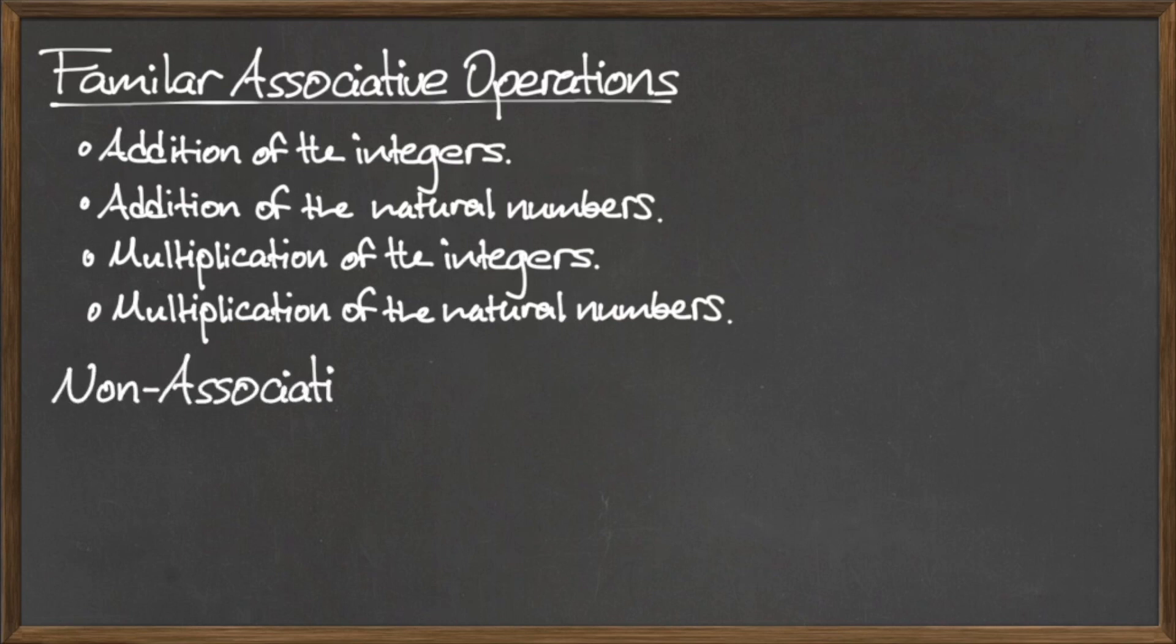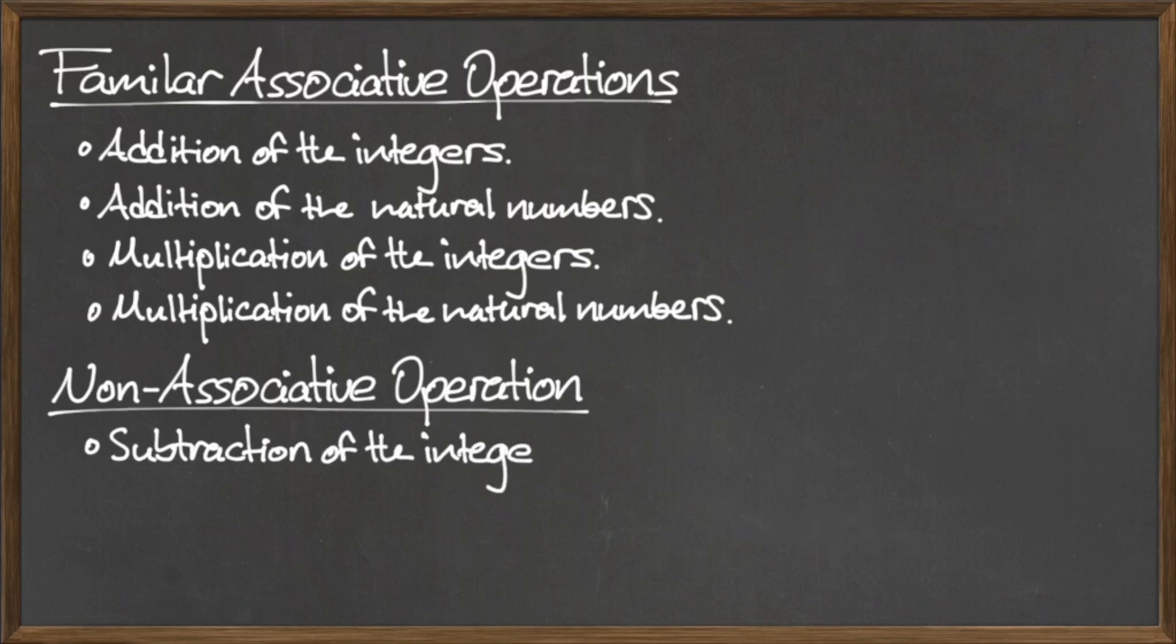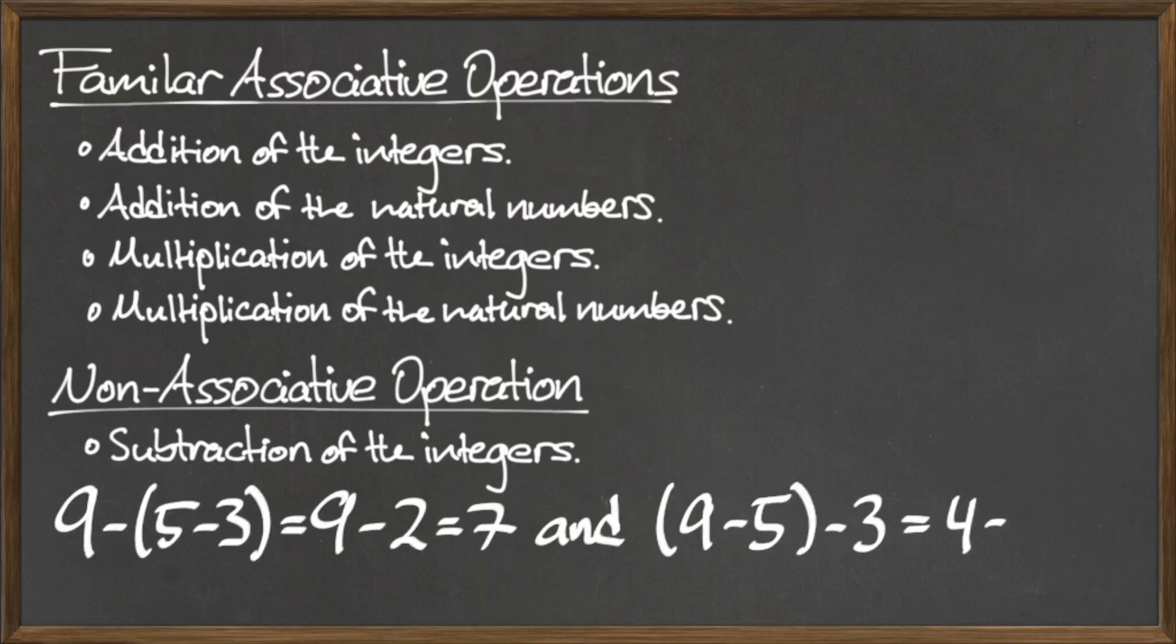One familiar binary operation that is not associative is the subtraction of integers. For example, 9 minus the quantity 5 minus 3 is equal to 9 minus 2, which is 7.